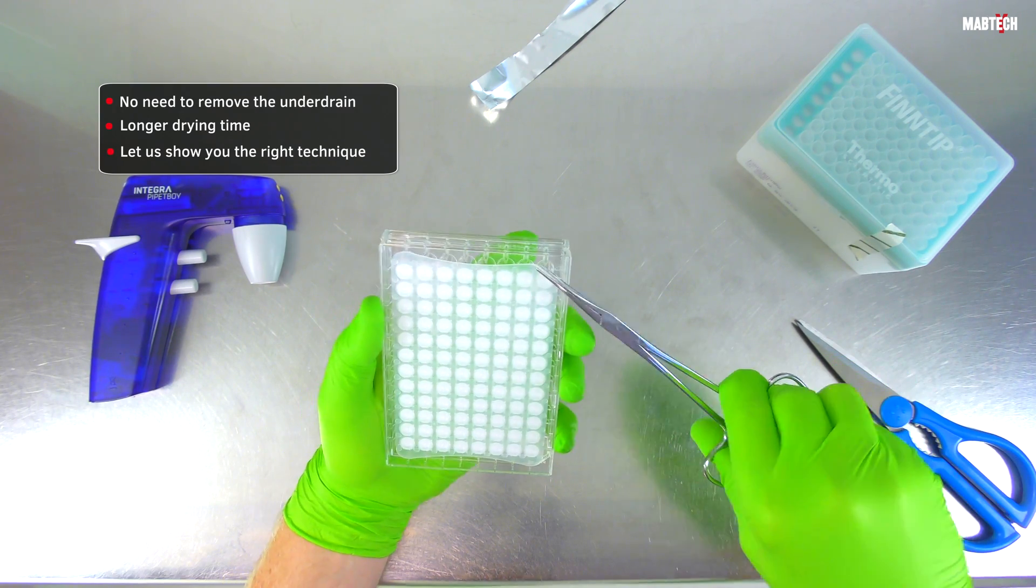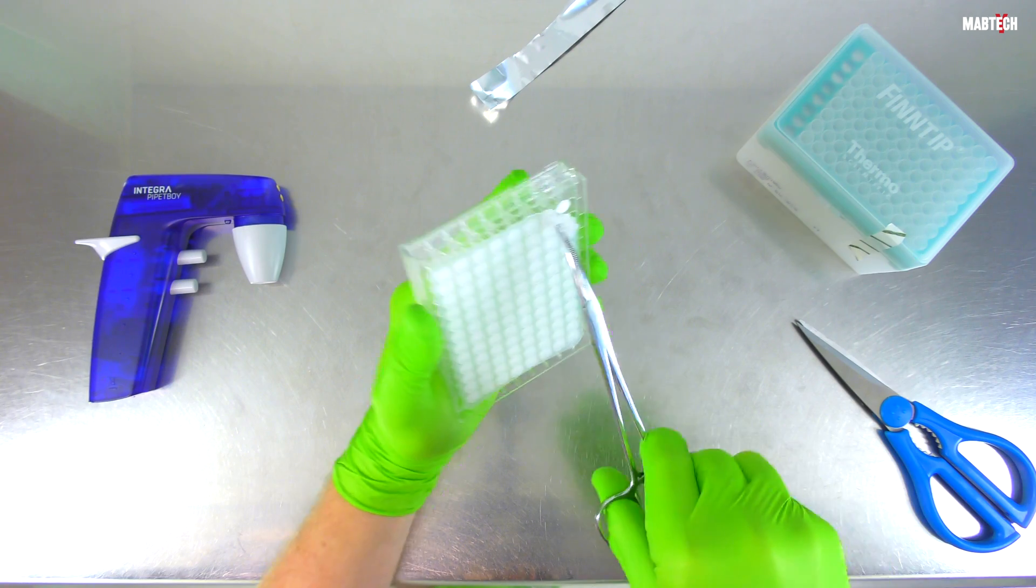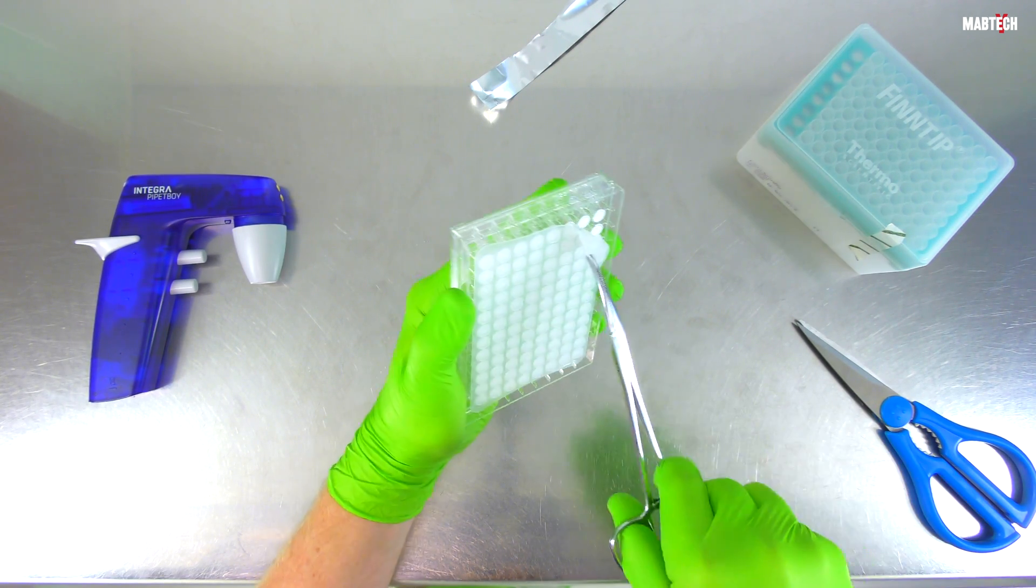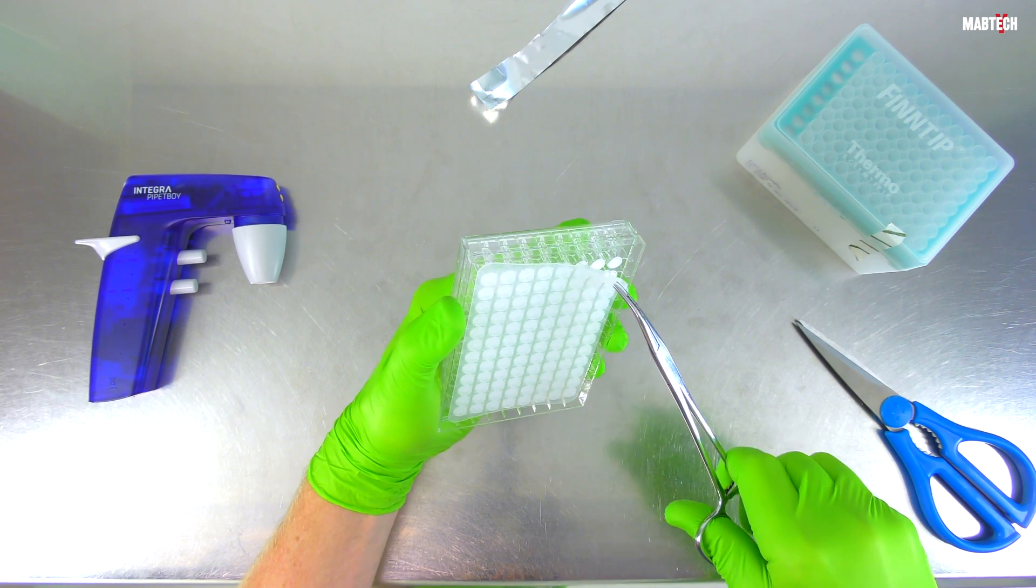Let us show you the right technique of how to do it using the pincer tool in the video. We begin by attacking one of the underdrain corners. Notice how the technician undoes the underdrain by using the wiggle technique.